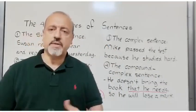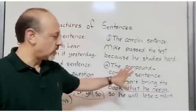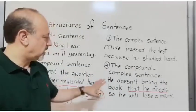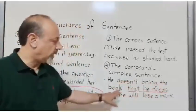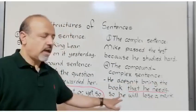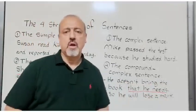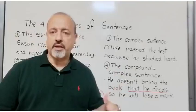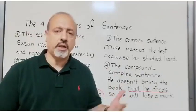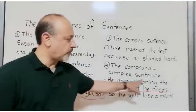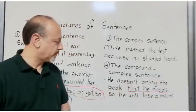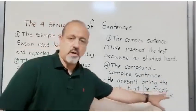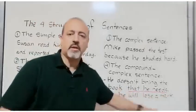The fourth structure of sentences is the compound-complex sentence. An example: 'He doesn't bring the book that he needs, so he will lose a mark.' Here, 'he doesn't bring the book' is an independent clause, 'that he needs' is a subordinate clause, and 'so he will lose a mark' is another independent clause.